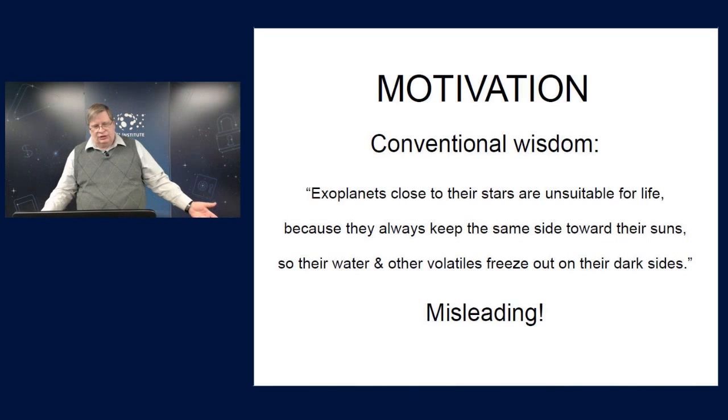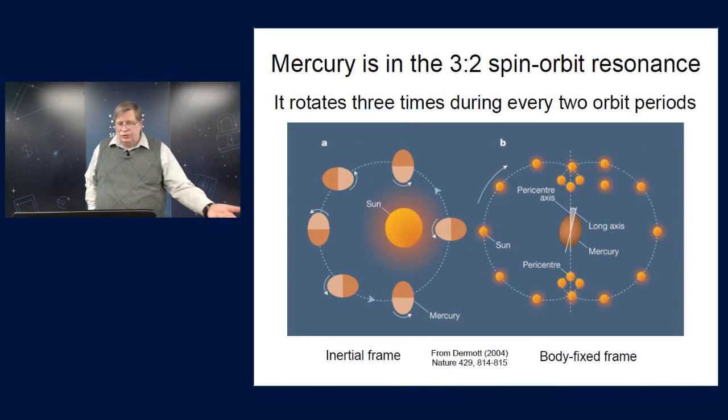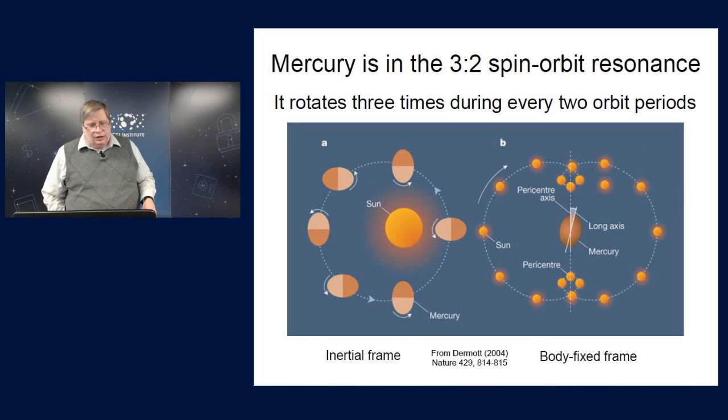And we have a nice counterexample in our own solar system. Mercury, which is the planet closest to our sun, is in what we call a three-to-two spin orbit resonance, which means it rotates three times during every two orbits.